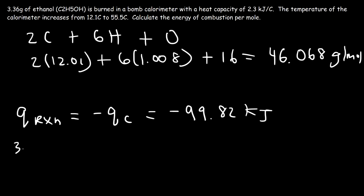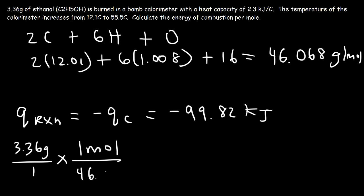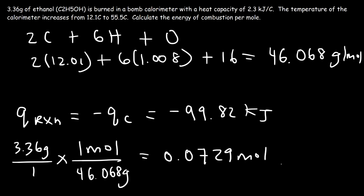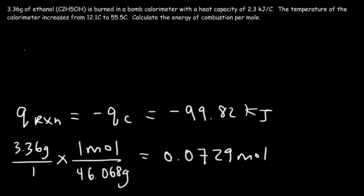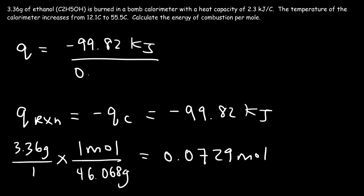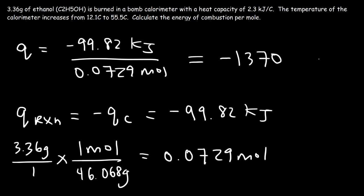Starting with 3.36 grams of ethanol, we divide by the molar mass of 46.068 grams per mole to get 0.0729 moles. To calculate the energy of combustion per mole, divide the energy by the number of moles: negative 99.82 kilojoules divided by 0.0729 moles. Rounded to three significant figures, that gives negative 1370 kilojoules per mole — the energy of combustion per mole.